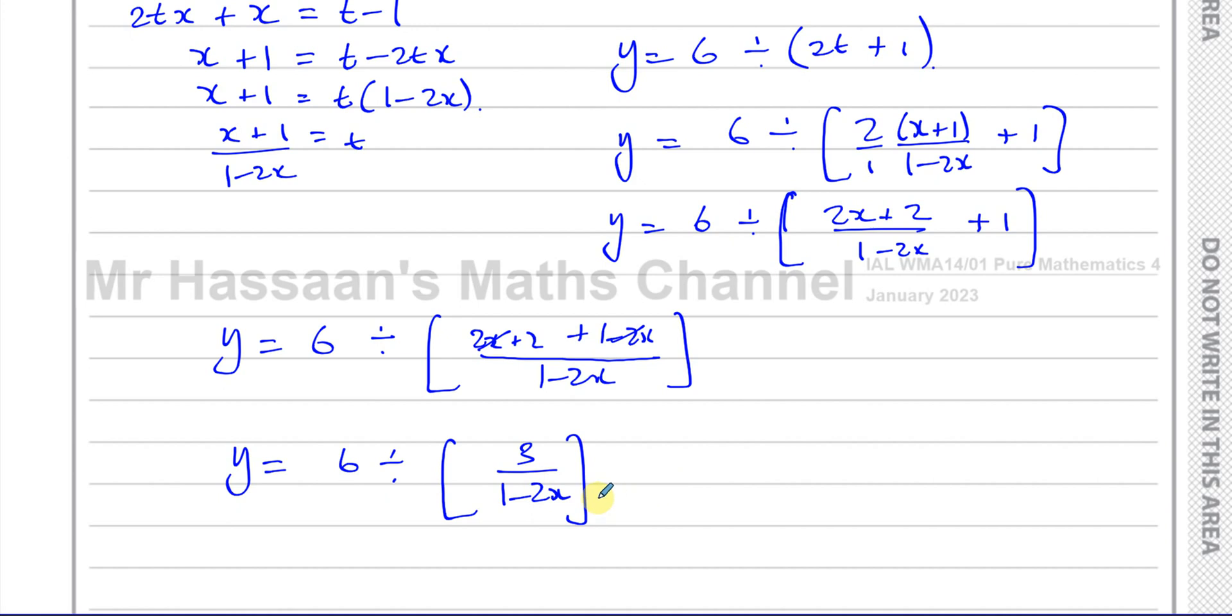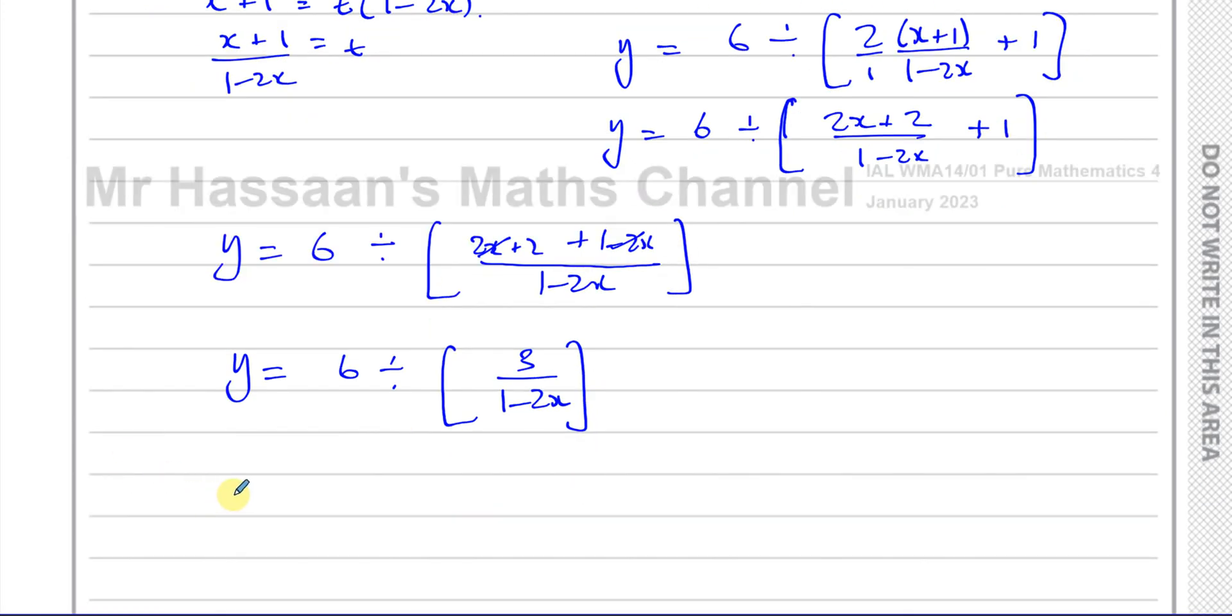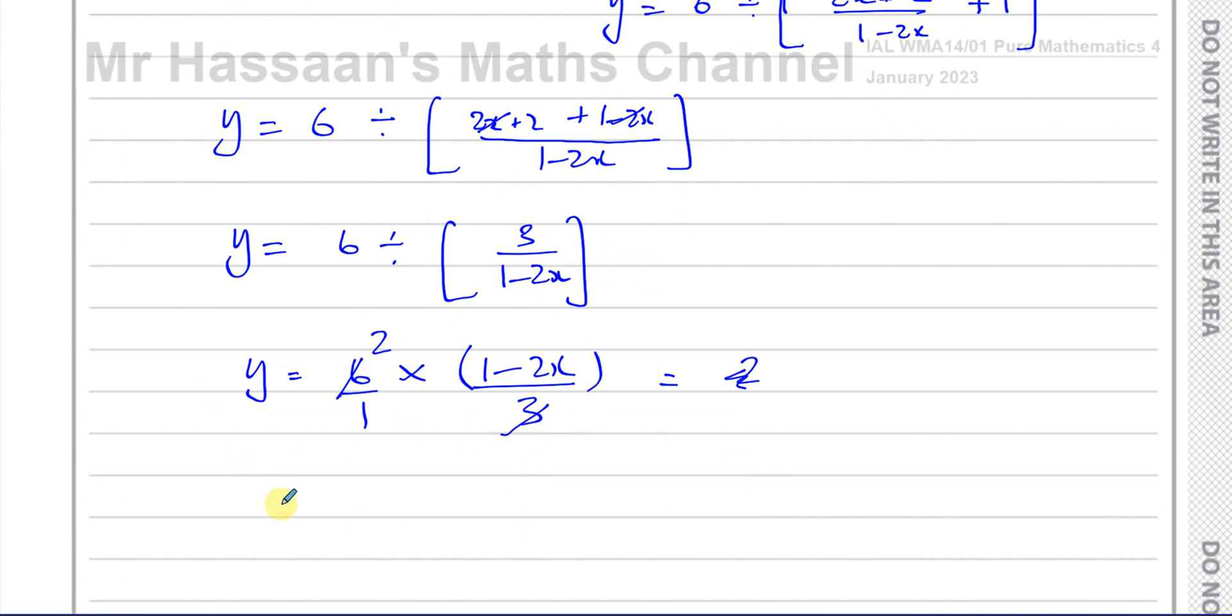Now when you divide a number by a fraction, you change the division to multiplication and write the reciprocal of that number. So it's 6 × (1-2x)/3. The 3 and the 6 can cancel before you multiply, so it's 2 times. So Y equals 2 times (1-2x). There's the answer.